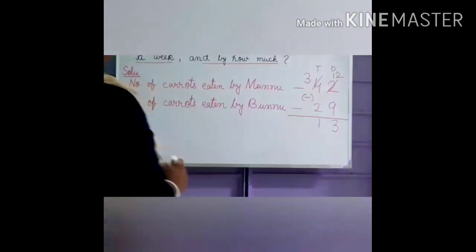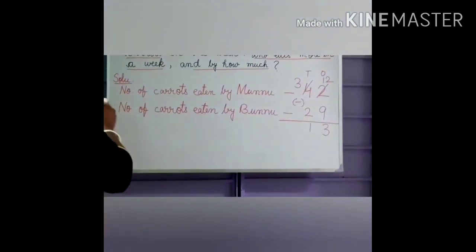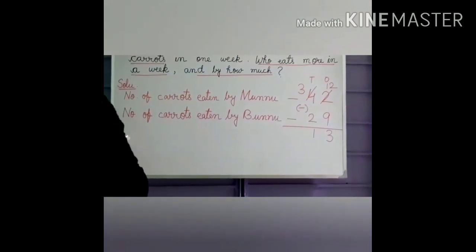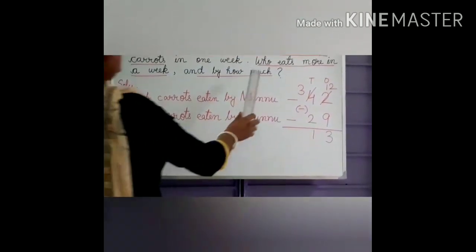Then 3 minus 2 equals 1. So the answer is 13. Now who eats more and by how much? Muru Rabbit eats more carrots.